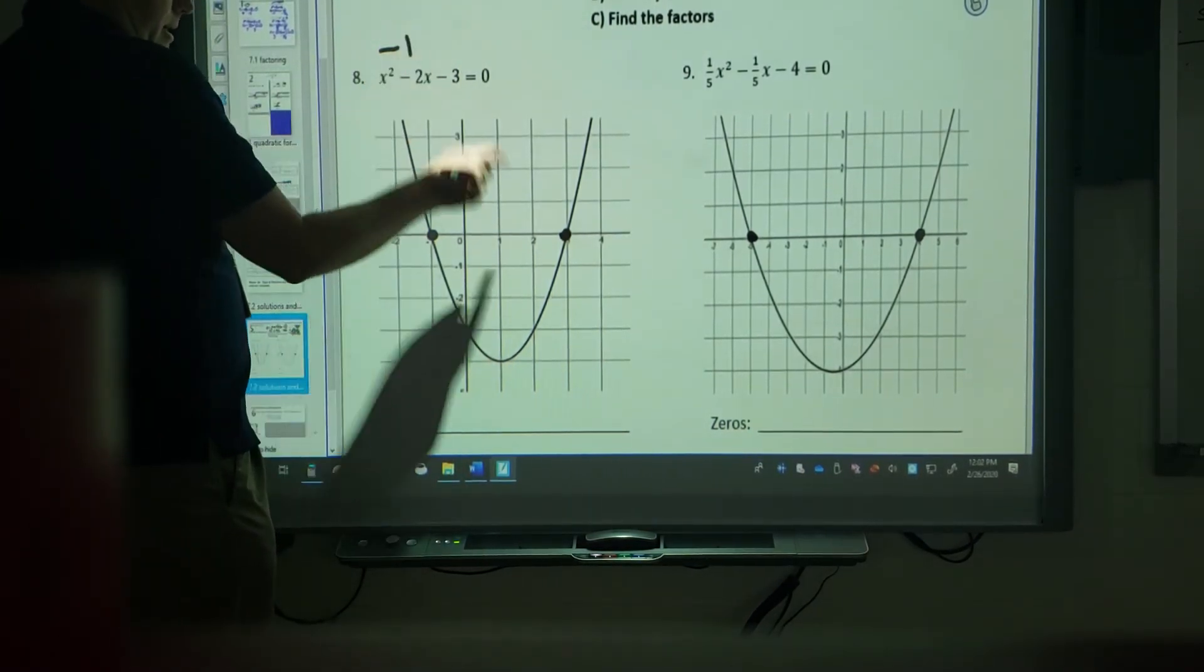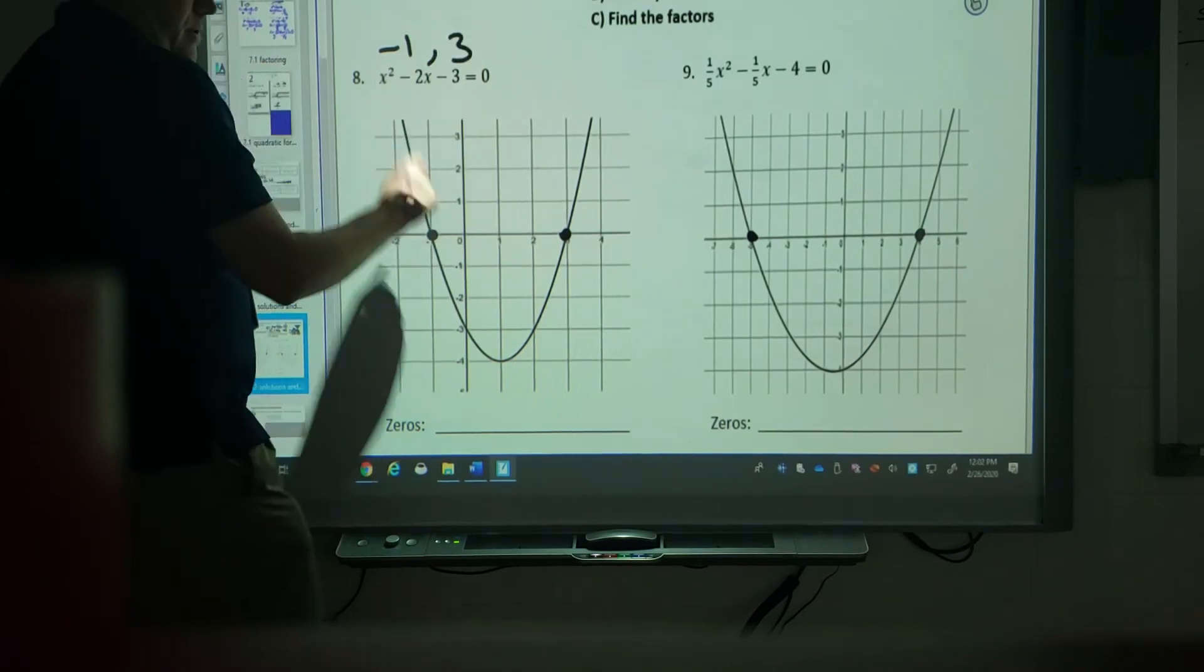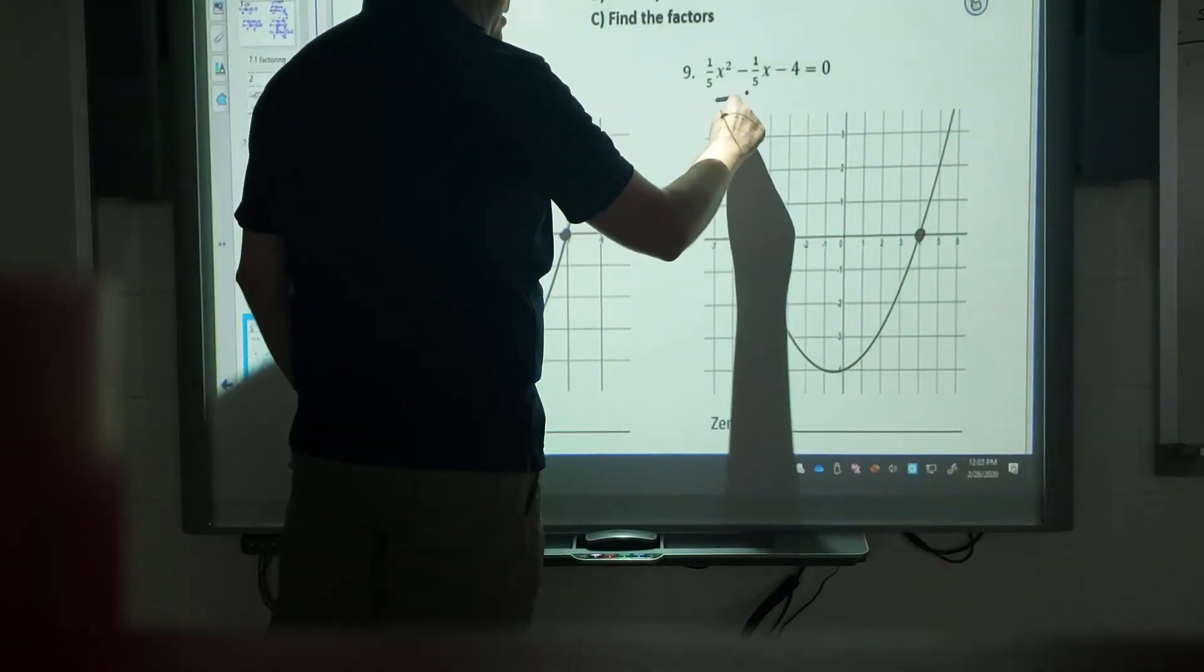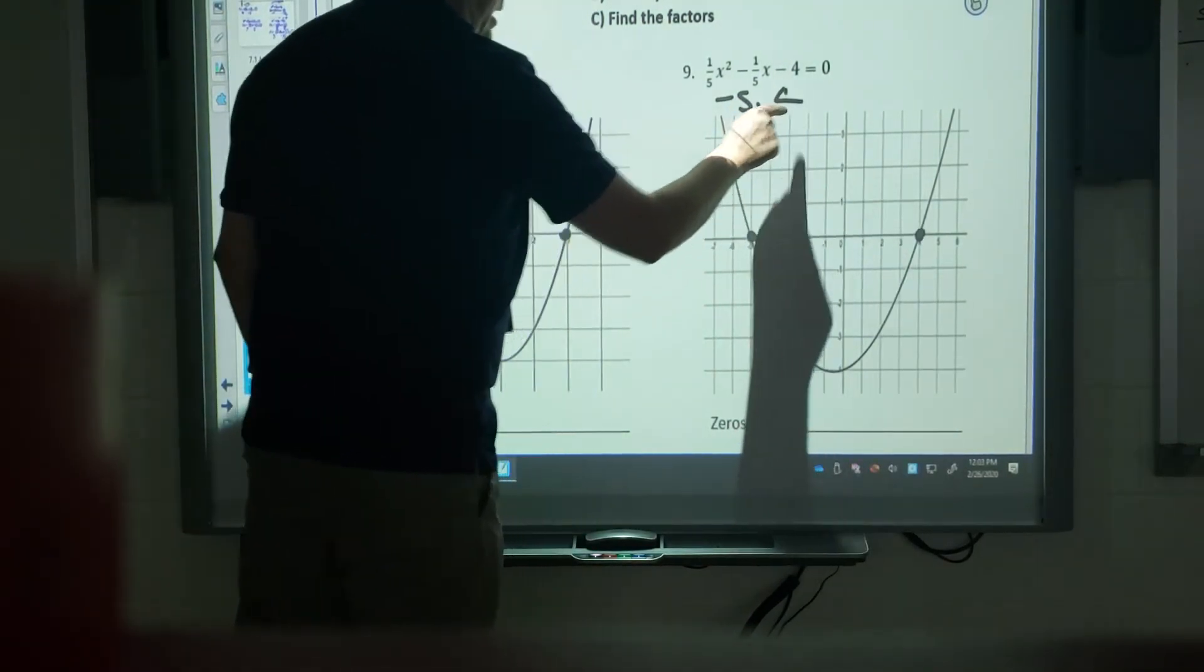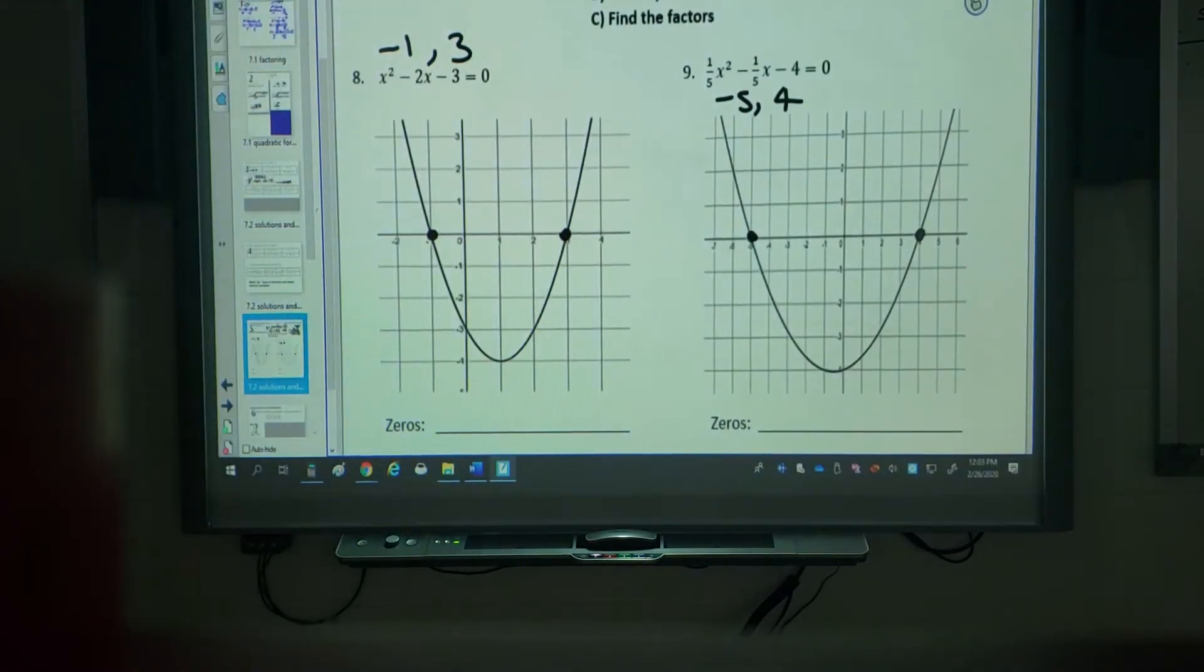So for this one, negative 1 and 3. For this one over here, negative 5 and 4. And you might be able to see this better on your sheet than from up here.